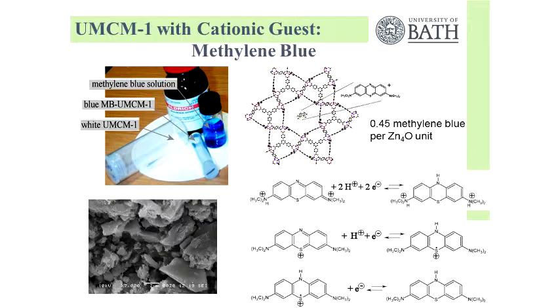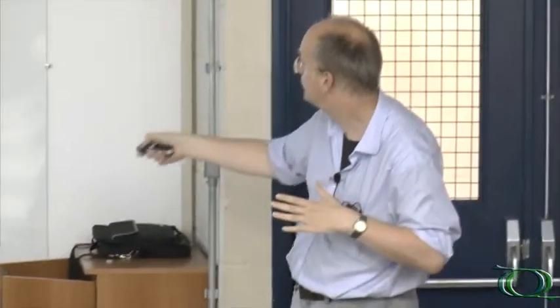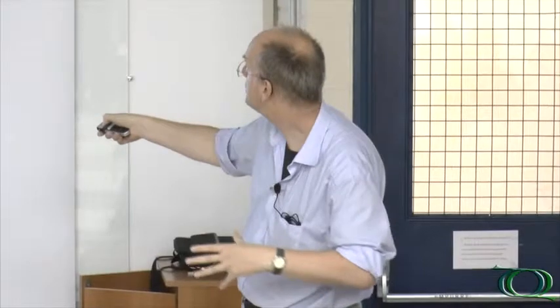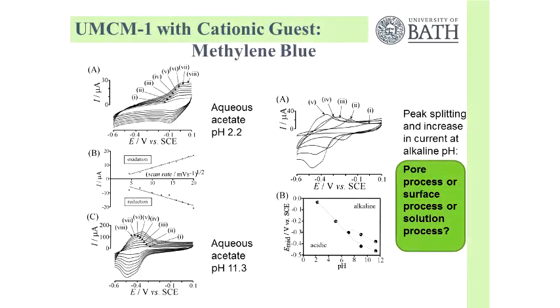When we change the pH, this material also switches the mechanism. It's not so big. We go from this mechanism to a single electron mechanism. Here we have simultaneous two electron reduction. Then if I go alkaline, I actually have two one electron reduction processes.